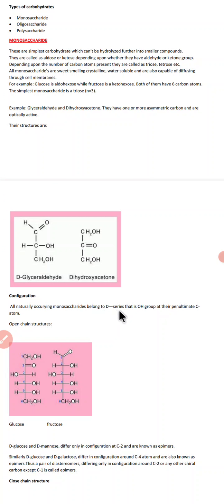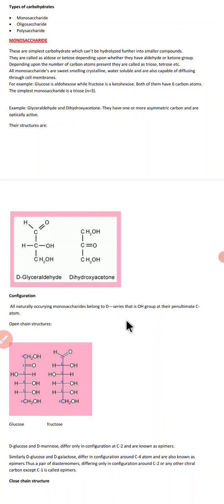All naturally occurring monosaccharides belong to the D-series, meaning the OH group at the penultimate carbon atom is present on the right side.